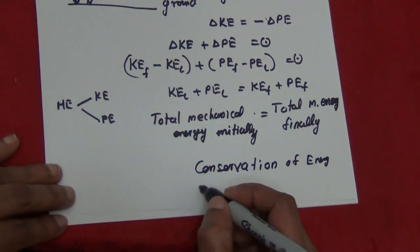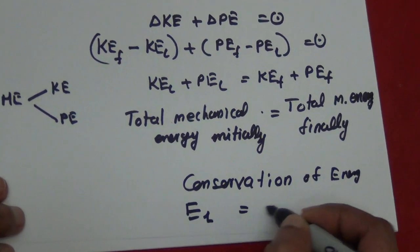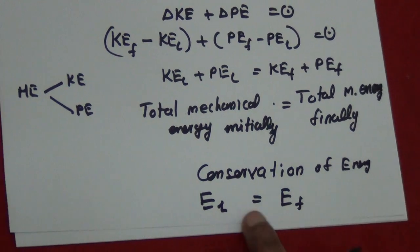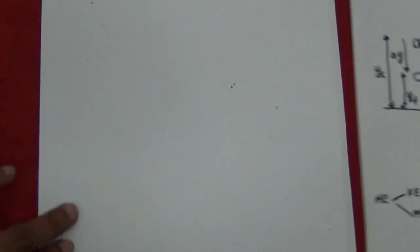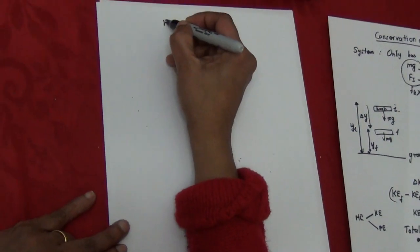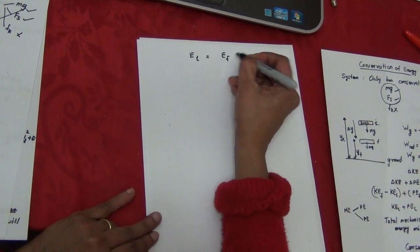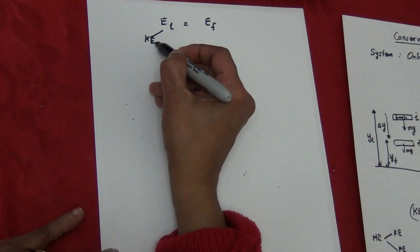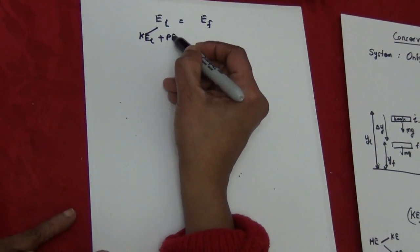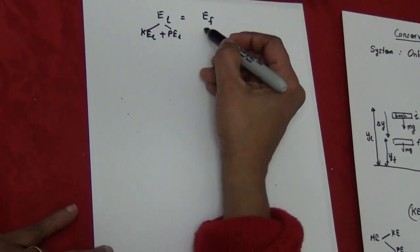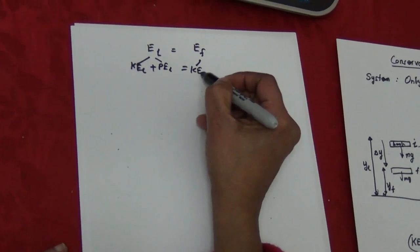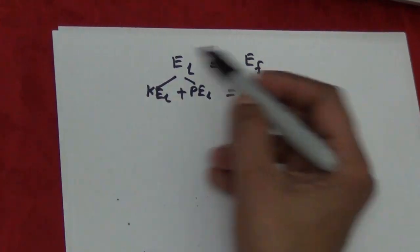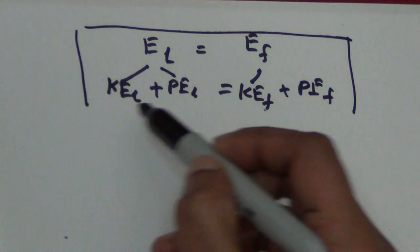In symbols, conservation of energy is written as E_initial = E_final, where E means kinetic energy plus potential energy. So KE_initial + PE_initial = KE_final + PE_final. This is the conservation of energy equation.